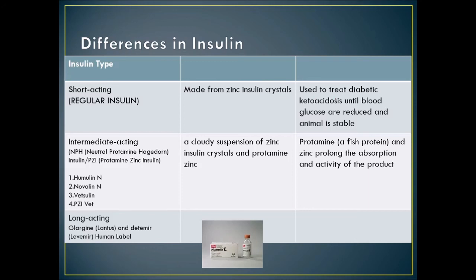Long-acting insulins include glargine — Lantus — and detemir — Levemir. These are human-labeled insulins that can be given once a day, but most often are given twice daily as Vetsulin or PZI Vet. It is best to feed the animal about 20 minutes before giving the injection.